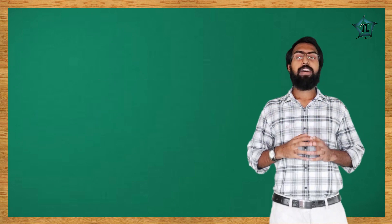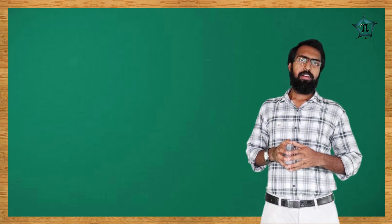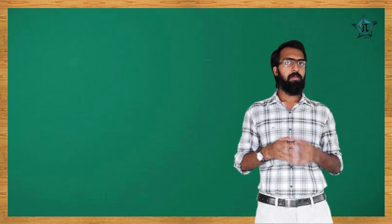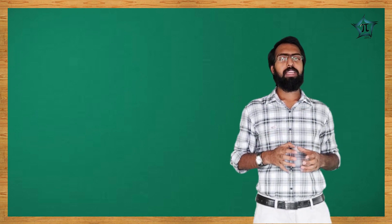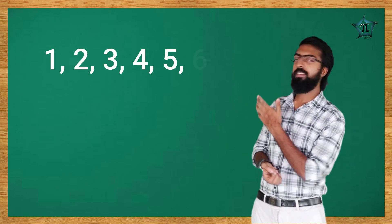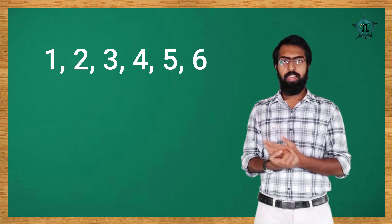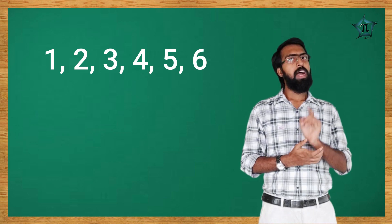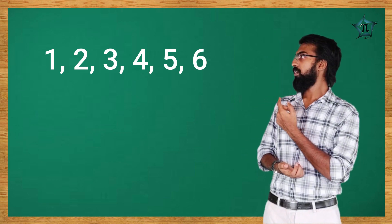Now we consider the sum of an arithmetic progression. Consider the natural numbers 1 to 100. This is an arithmetic progression. Now we go to the board to discuss the sum.